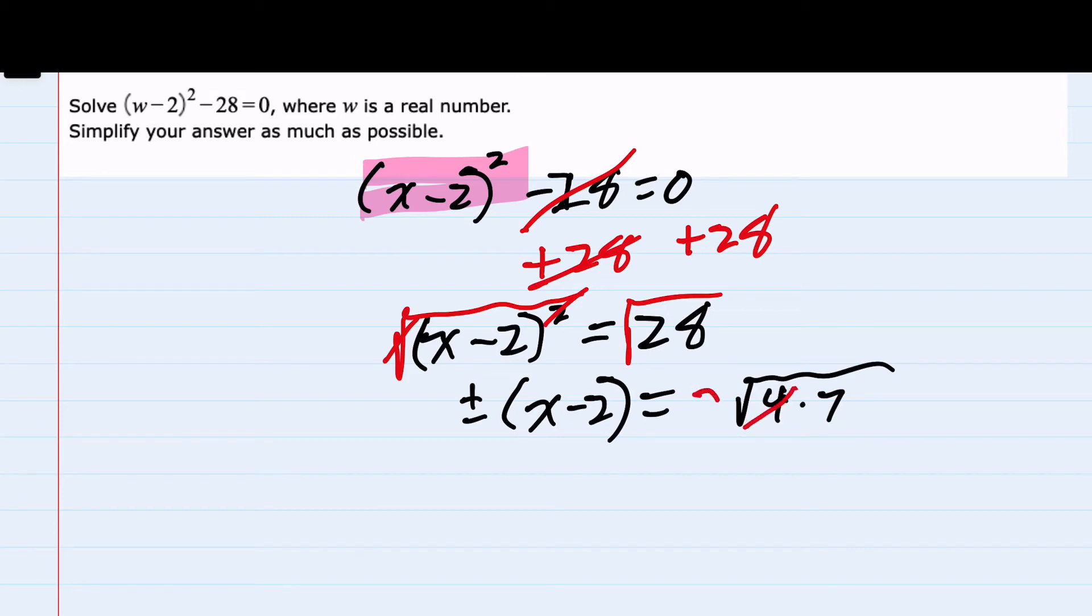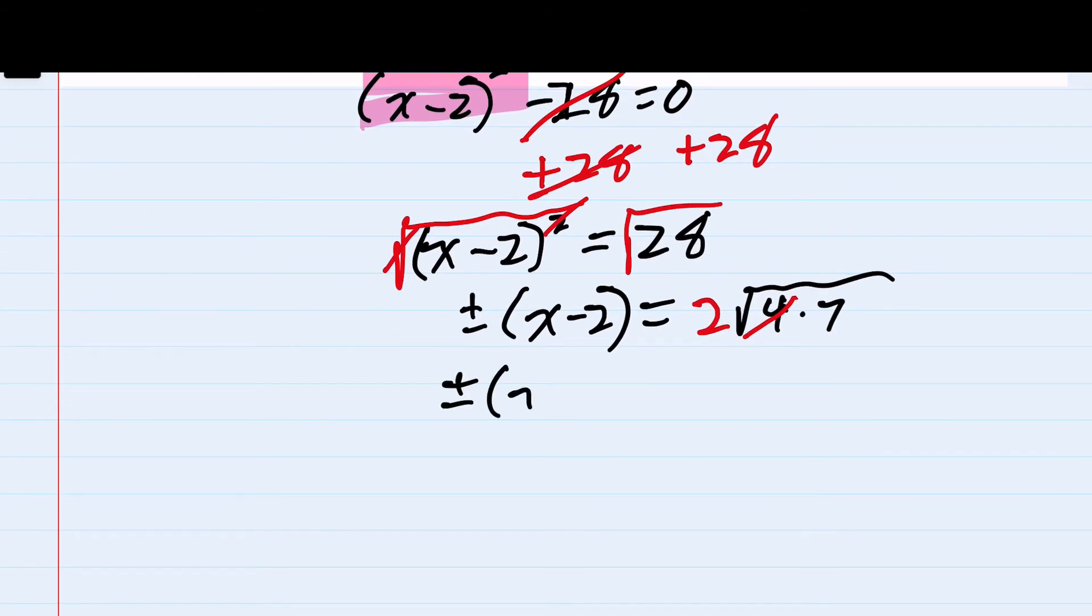which brings it outside the square root as a 2. And we now have positive or negative x minus 2 equals 2 square roots of 7.